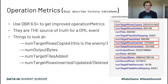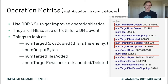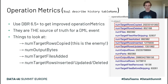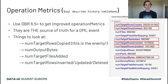Operation metrics. If you do a SQL command 'DESCRIBE HISTORY [delta_table_name]', you'll see a column called operation metrics. As of Databricks Runtime 6.5, the operation metrics got a lot better — definitely use 6.5+. To me, they are the source of truth for a DML event: updates, inserts, but especially merge.